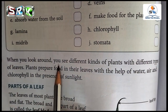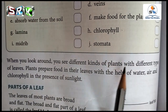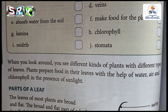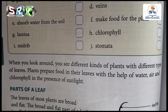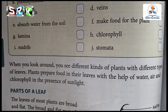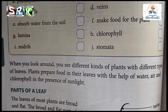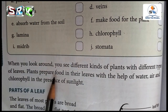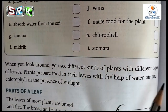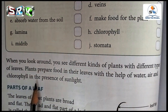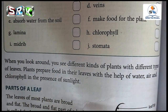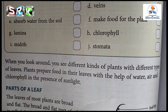You see different kinds of plants with different types of leaves. If we look at the plants in the presence of sunlight, plants prepare food in their leaves with the help of water, air, and chlorophyll in the presence of sunlight. How do plants prepare their food?